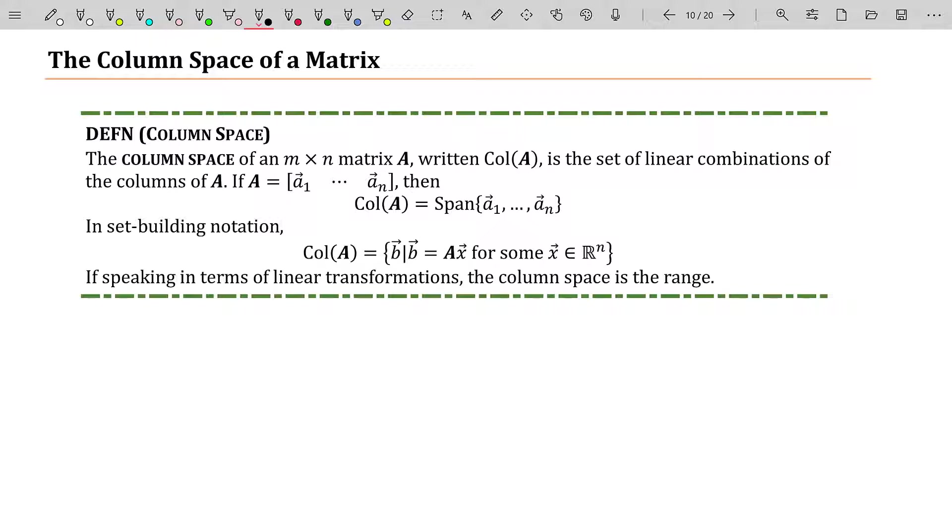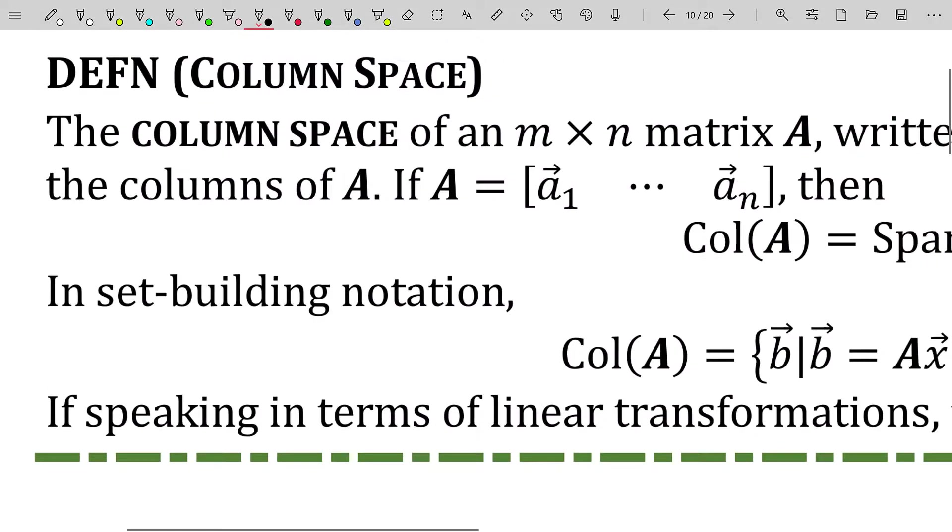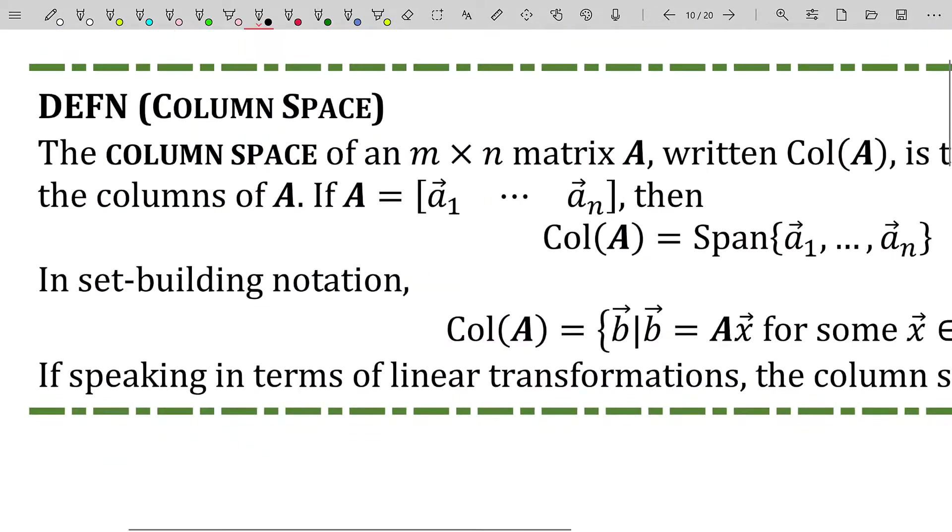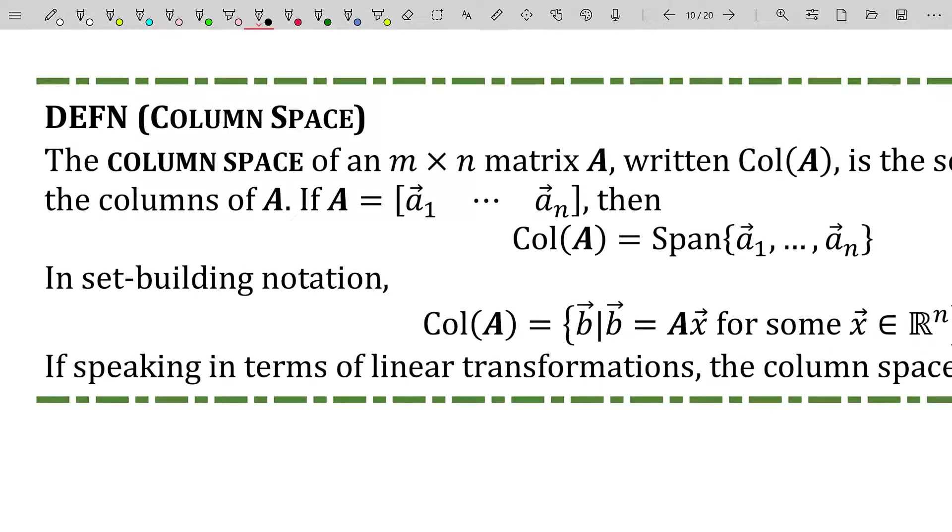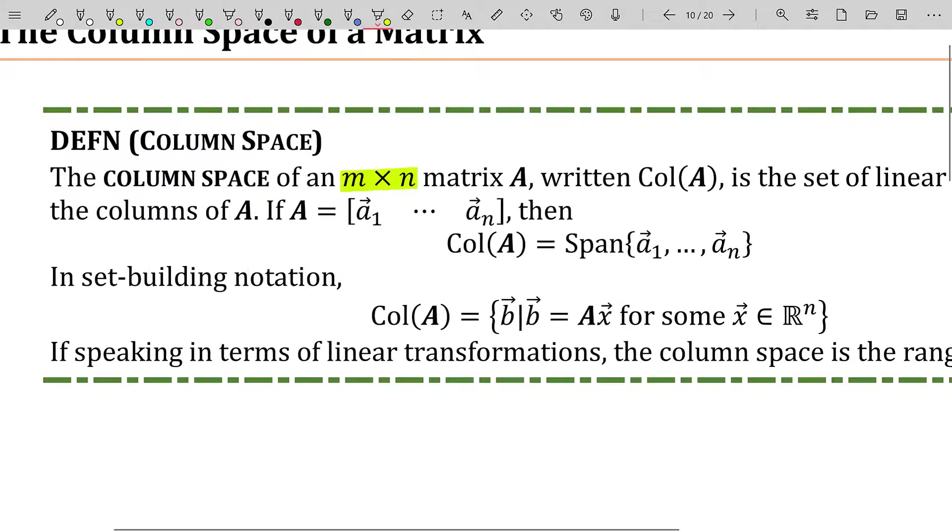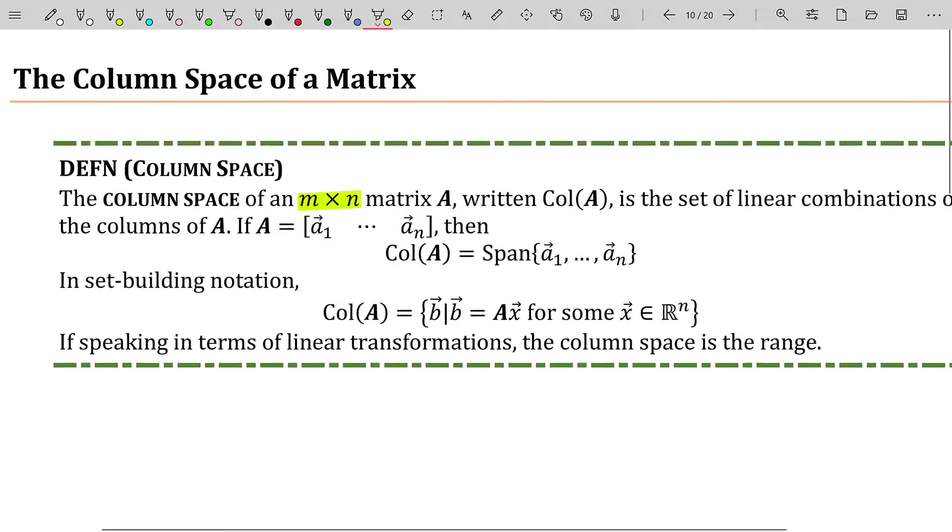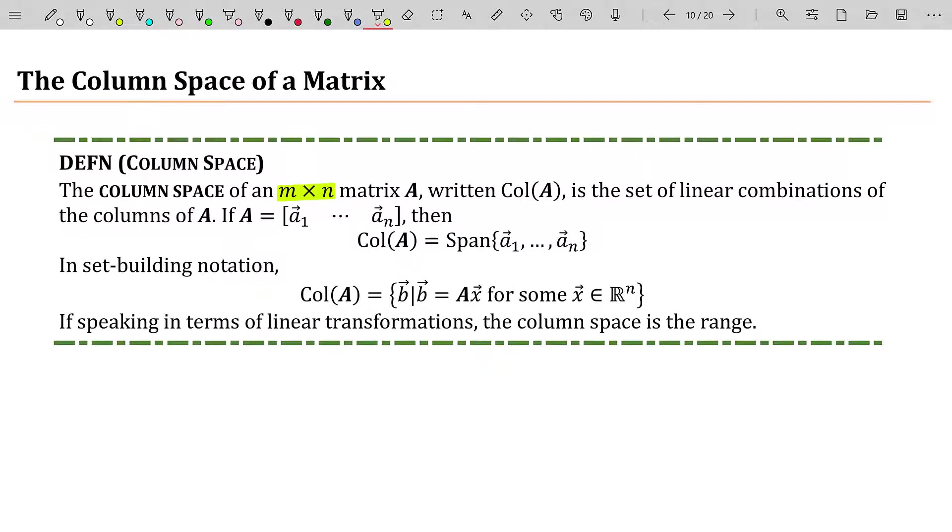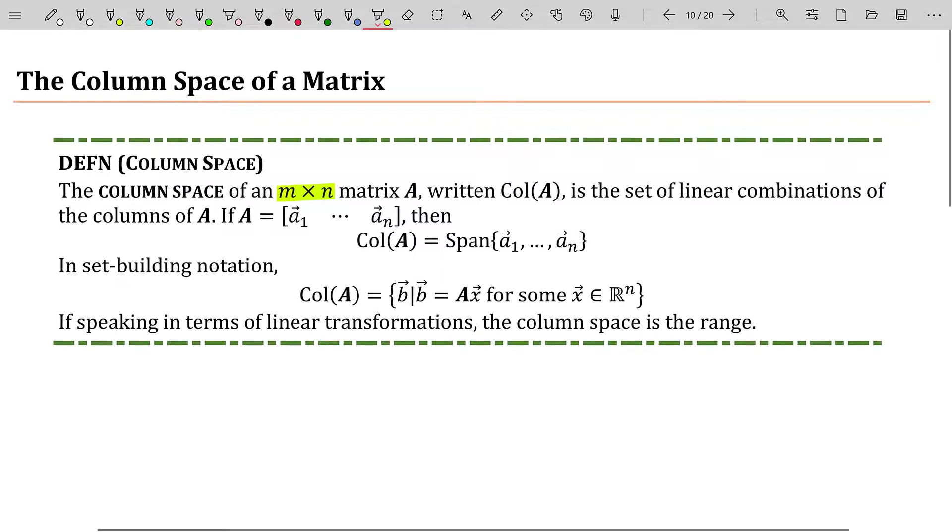Now we're going to formalize another set that we never actually had a name for. The column space of an m by n matrix A, written Col(A), is the set of linear combinations of the columns of A.